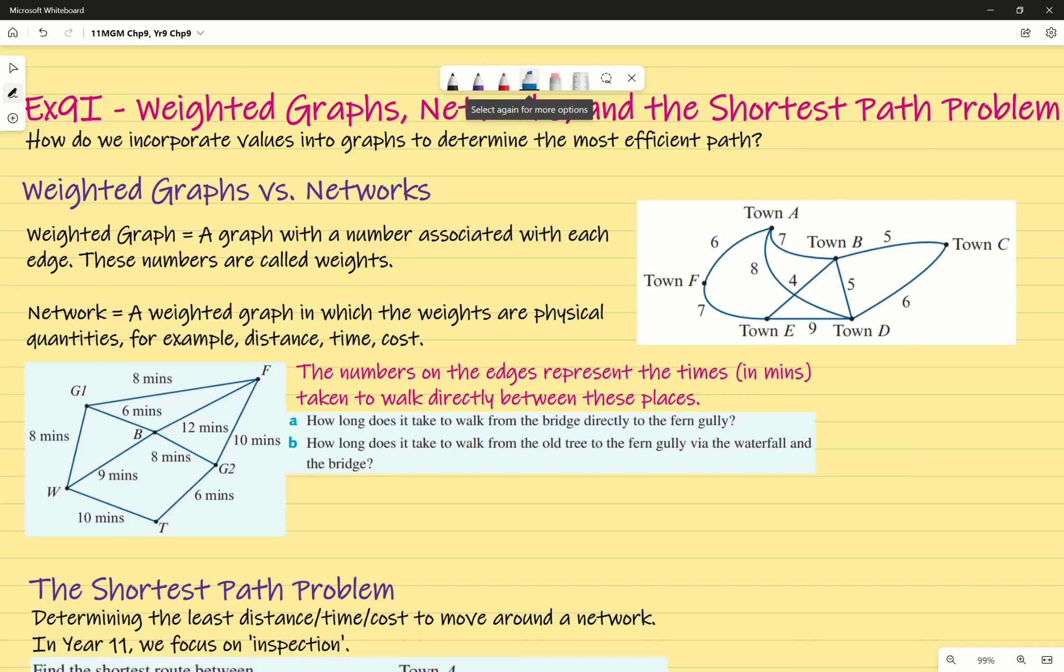A network is specifically a weighted graph in which the graph has weights that are specific quantities - for example distance, time and cost. So if you're looking at a textbook question that just says these are the numbers, find the smallest value, that would be a weighted graph. However if it provides something in terms of time, distance, cost, man hours, anything that's to do with a specific physical quantity, that's to do with a network.